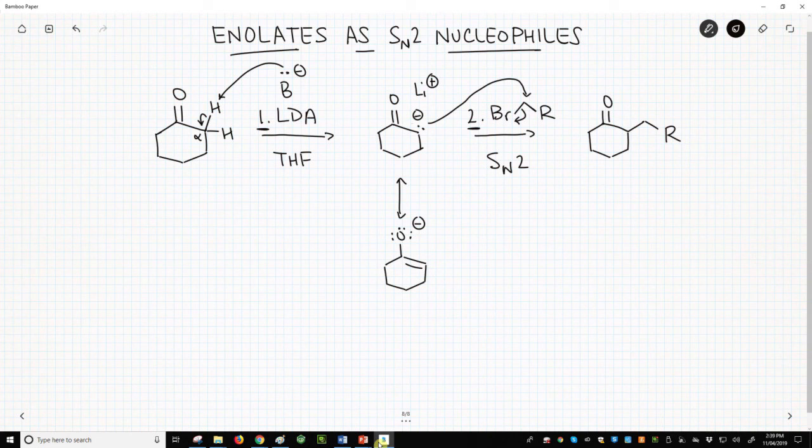Therefore, in enolate alkylations, the halide needs to be a primary halide. So our halide must be primary.